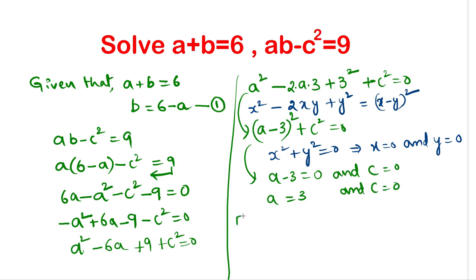Now a equal to 3. From equation number 1, we can write b equal to 6 minus a, a value is 3. So that is equal to 6 minus 3 is 3. So the solution is a equal to 3, b equal to 3 and c equal to 0.